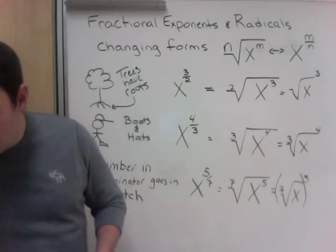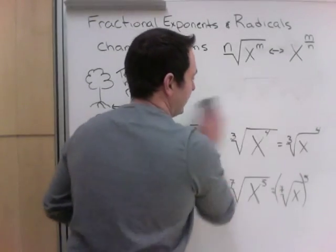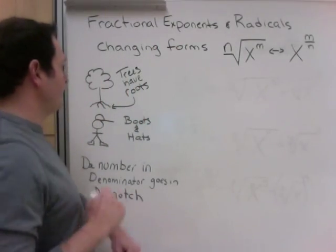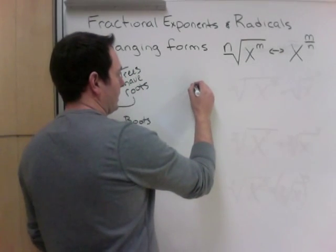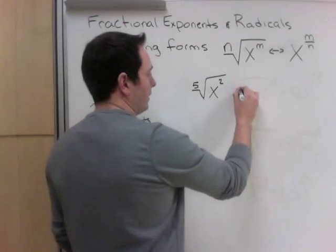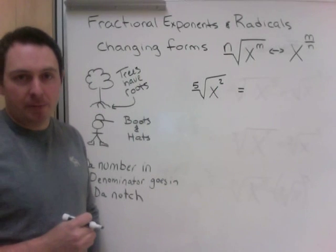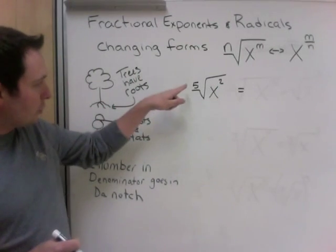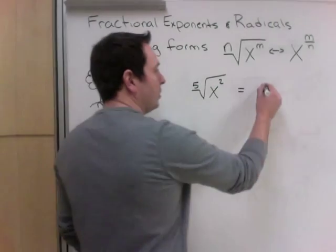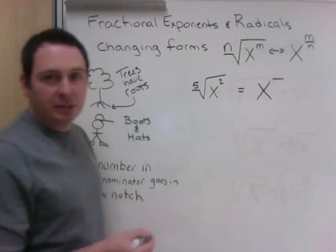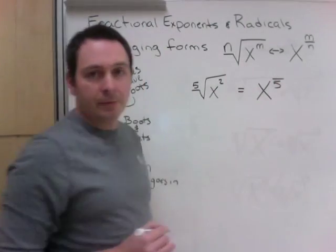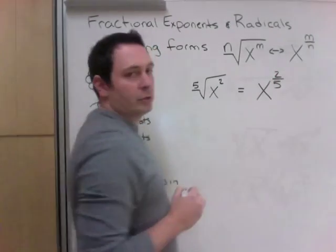Let's look at one more example of each going the other direction. For 'trees have roots': given the fifth root of x squared, write it in exponent form. Trees have roots — the root part is the bottom, because a root of a tree goes in the ground. So when I set up my fractional exponent, the root type — 5 — goes in the bottom, and the 2 that's left over goes on top: x to the power of 2 fifths.